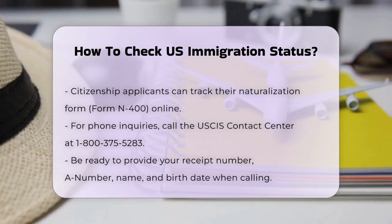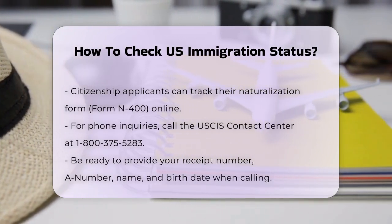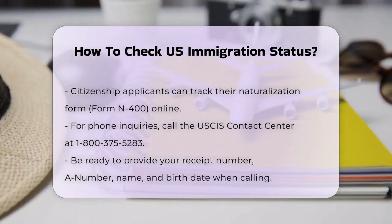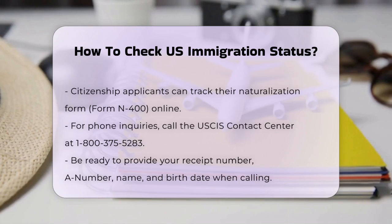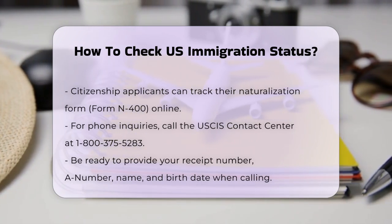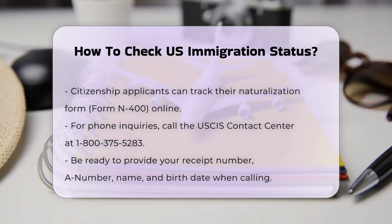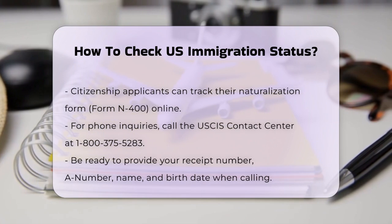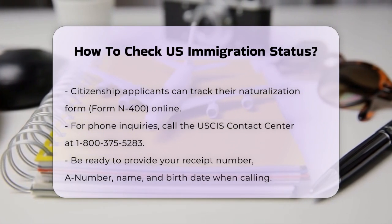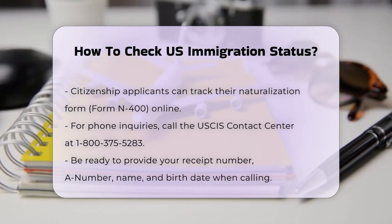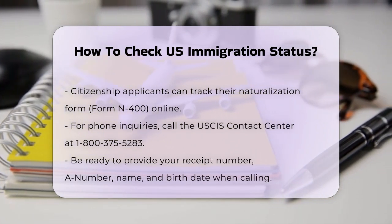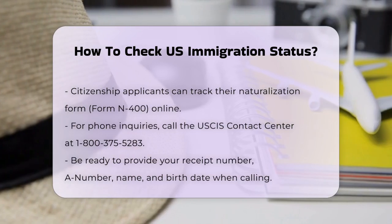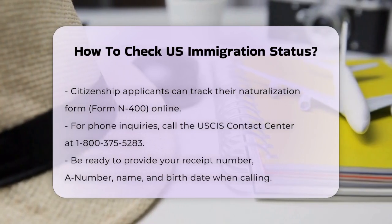If you prefer to check your status by phone, you can call the USCIS Contact Center at 1-800-375-5283. Be prepared to provide your receipt number, A number if applicable, name, and birth date. Keep in mind that phone lines can be busy, so it's often quicker to use the online tools.